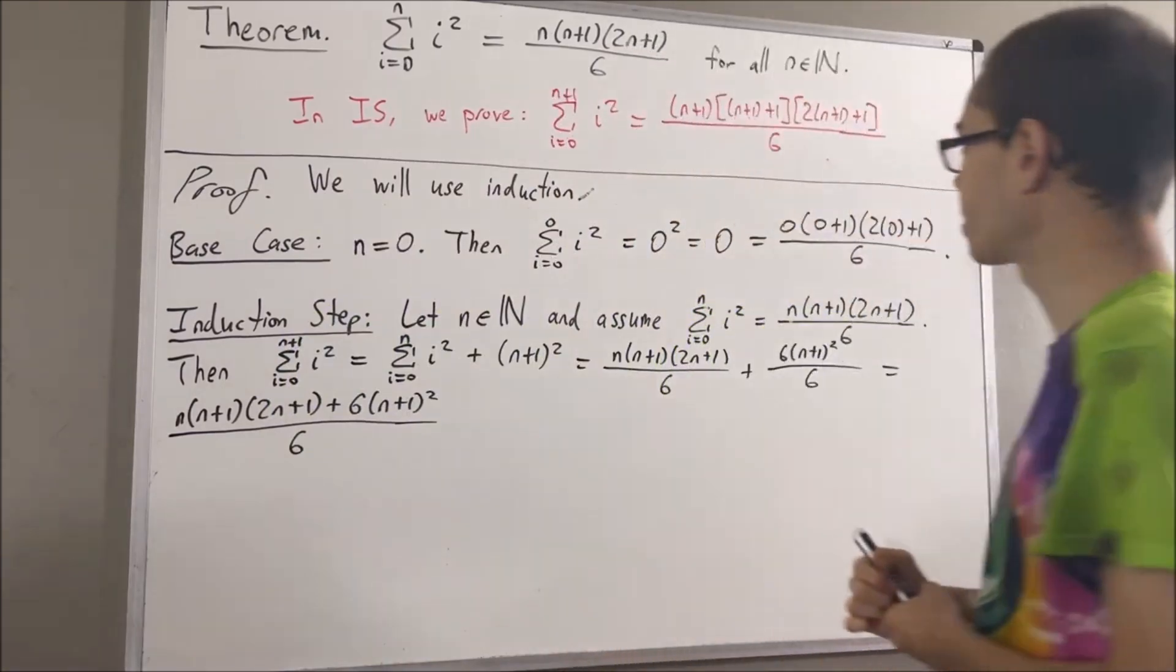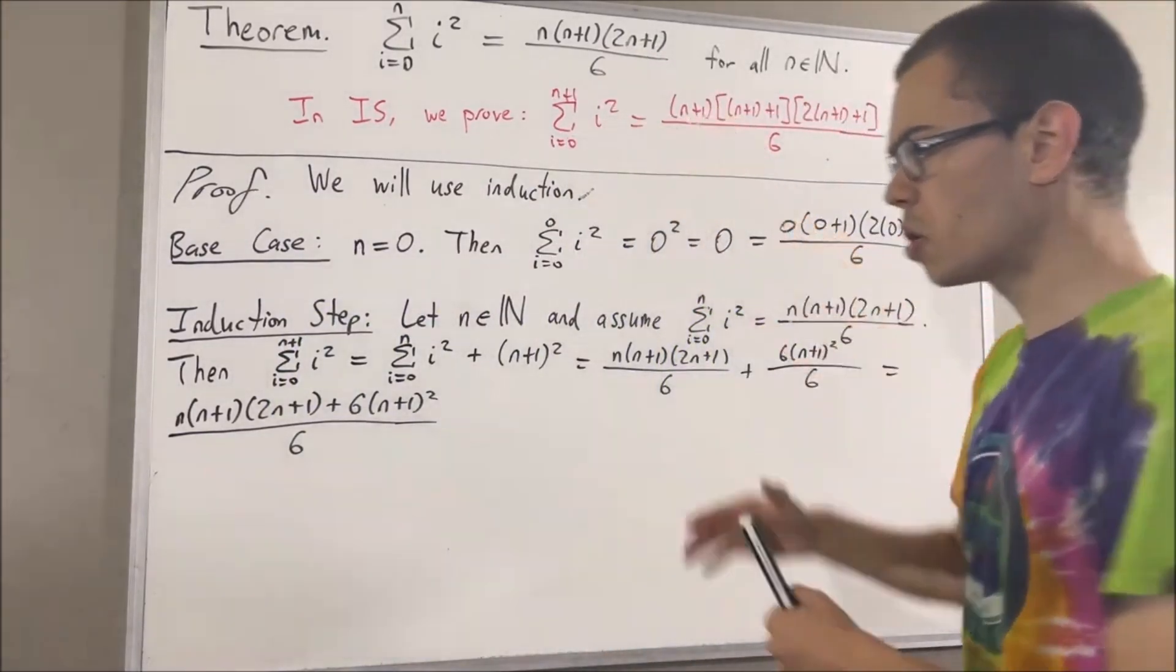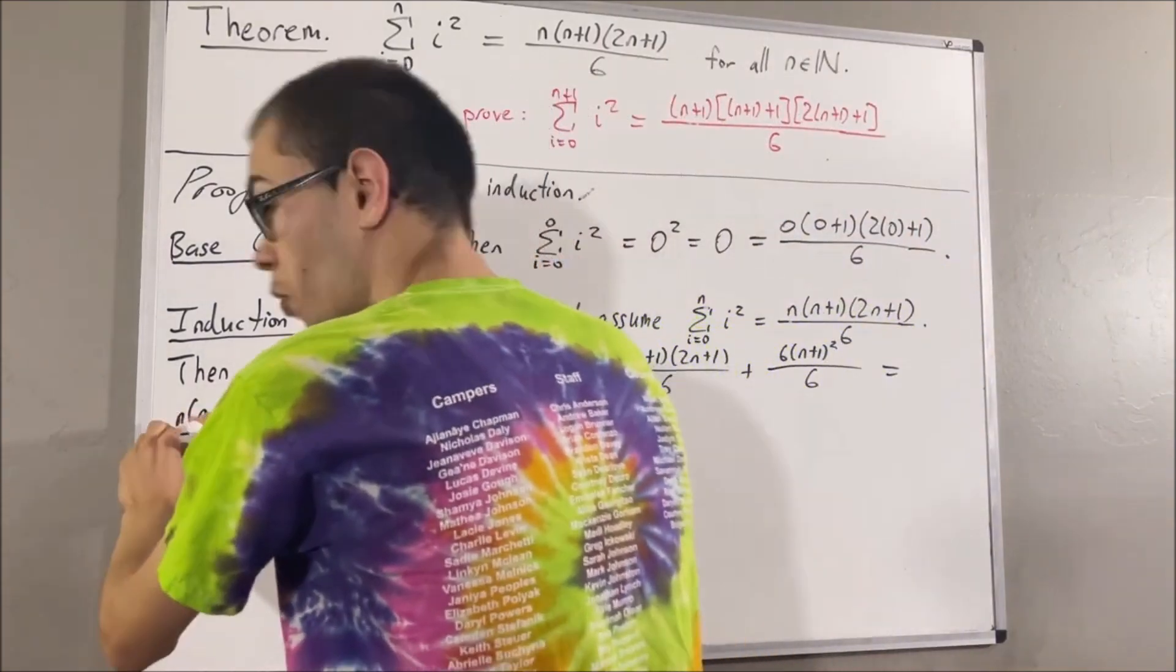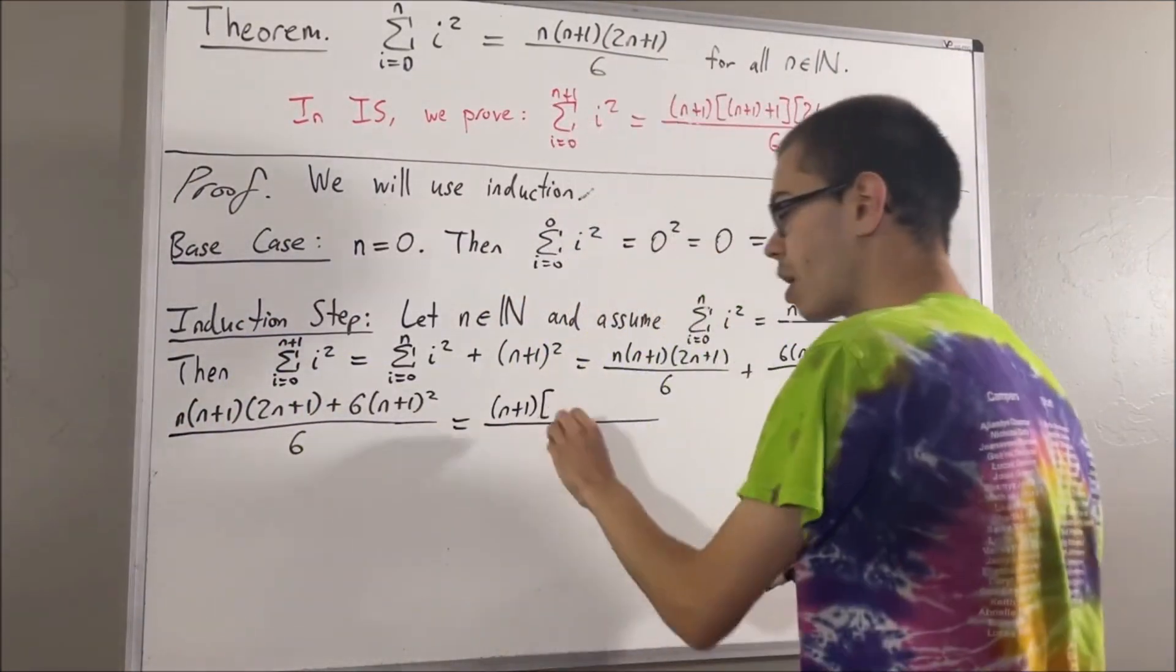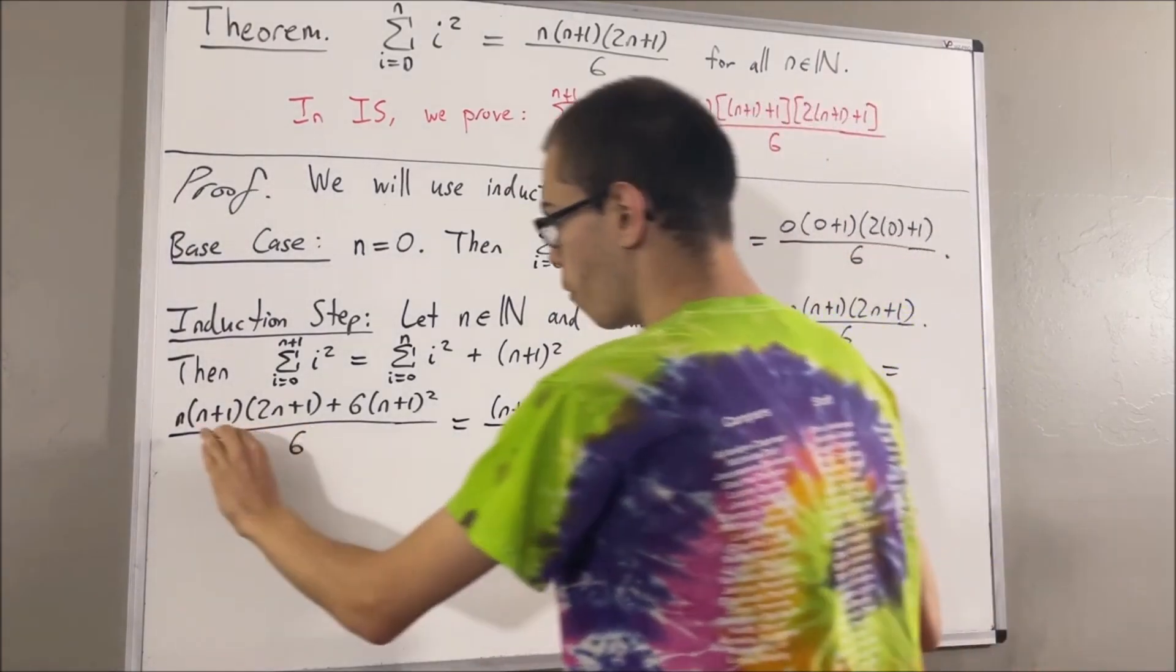But then notice, one of the factors in the numerator is n plus one. So let's factor out in n plus one. If we factor out in n plus one, what are we going to get? Well, for the first term, we're going to have n times 2n plus one.